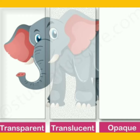Now look at this elephant. We can see the half face of this elephant through a transparent object very clearly. Whereas through a translucent object we can see the elephant partially. And through opaque objects we cannot see the elephant at all.